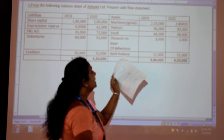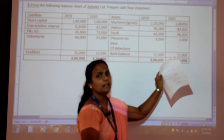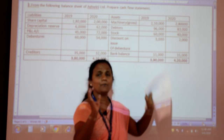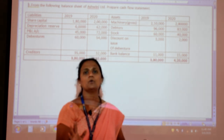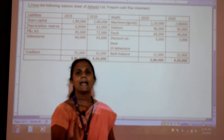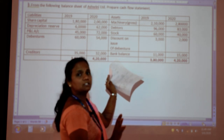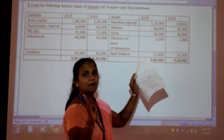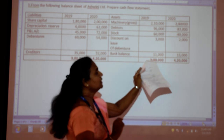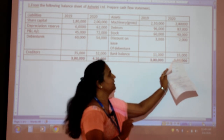The bank balance: the beginning balance was 11,000 and the closing balance is 15,000. When you take the problem, first you have to check cash and cash equivalents. Here you have only one item — bank balance — 11,000 at beginning and 15,000 at closing.